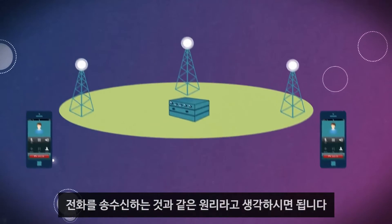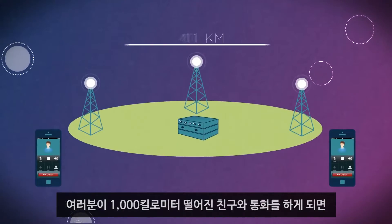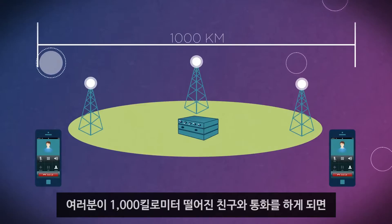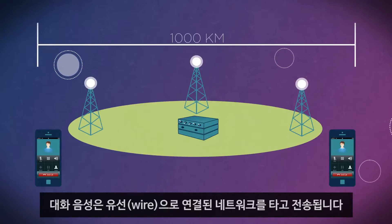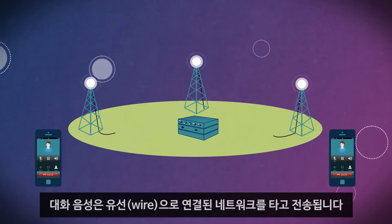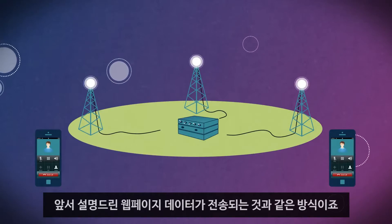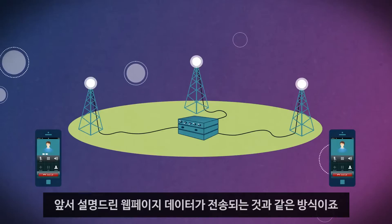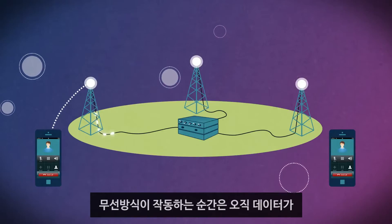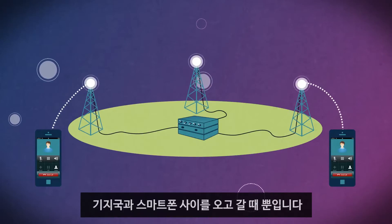It works much the same way with phone calls. If you are talking to a friend 1,000 kilometers away, that conversation runs through a network of wires, just like accessing a web page. It's only wireless when it travels between the towers and the phones.